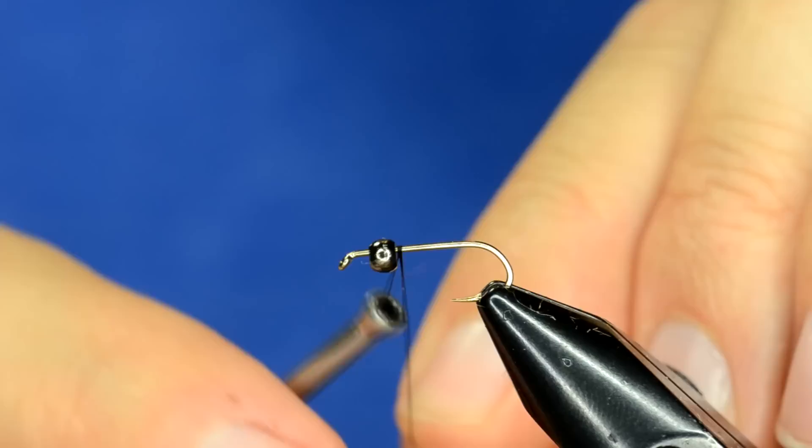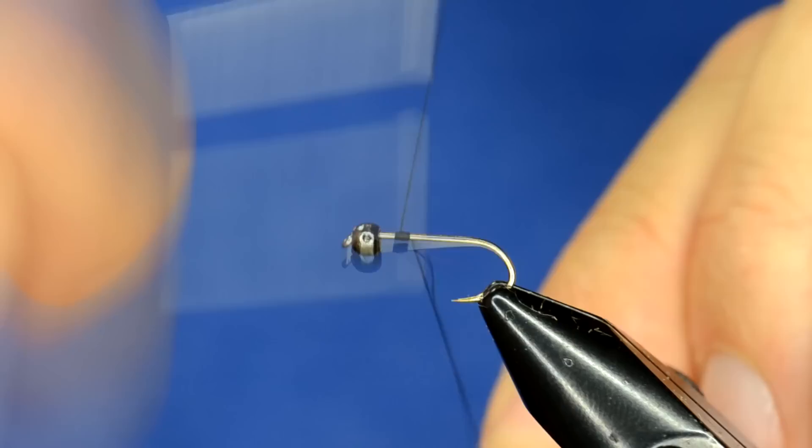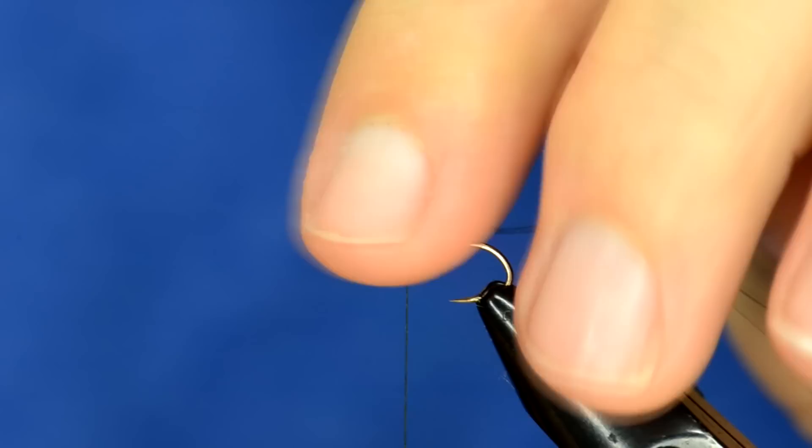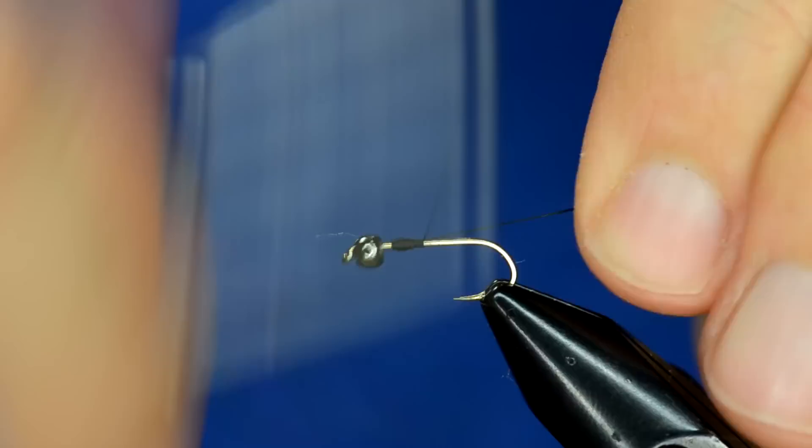So I'm going to start my thread right where I want the bead to basically butt up against. You don't want to crowd the eye at the end. You'll see, this is because that's where we're going to dub things. So we'll build up a little stoppage point for the bead.